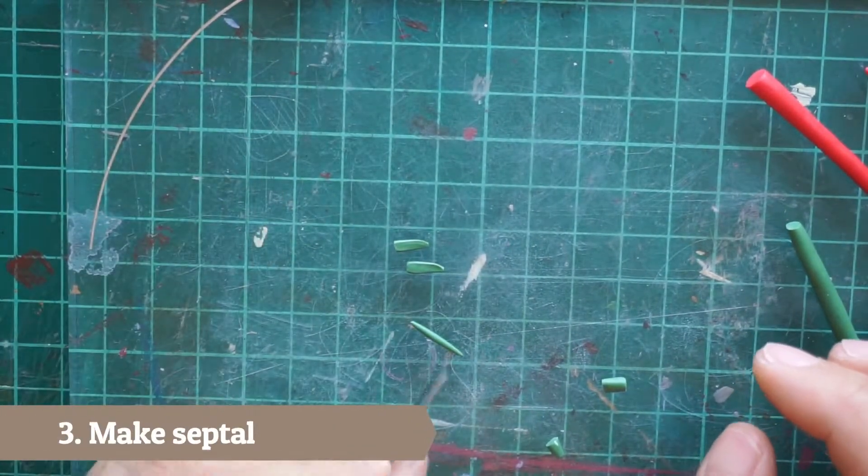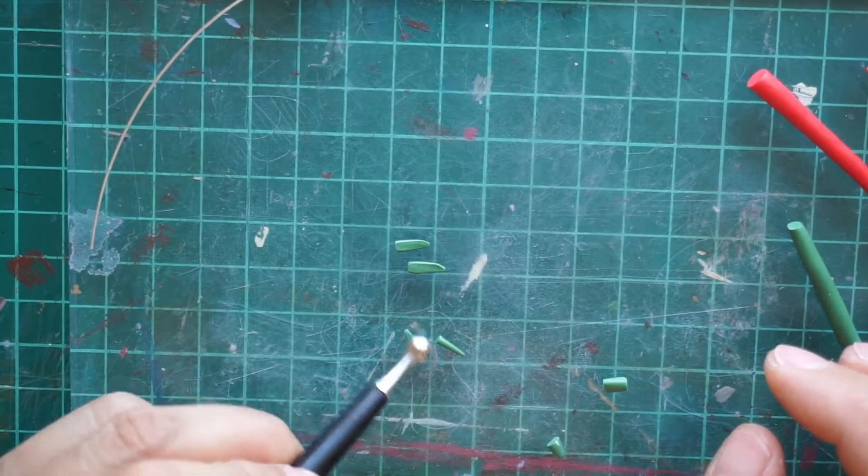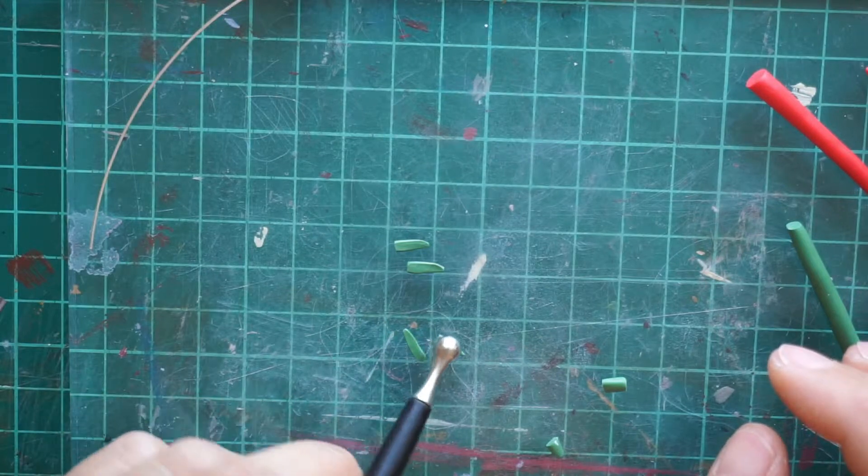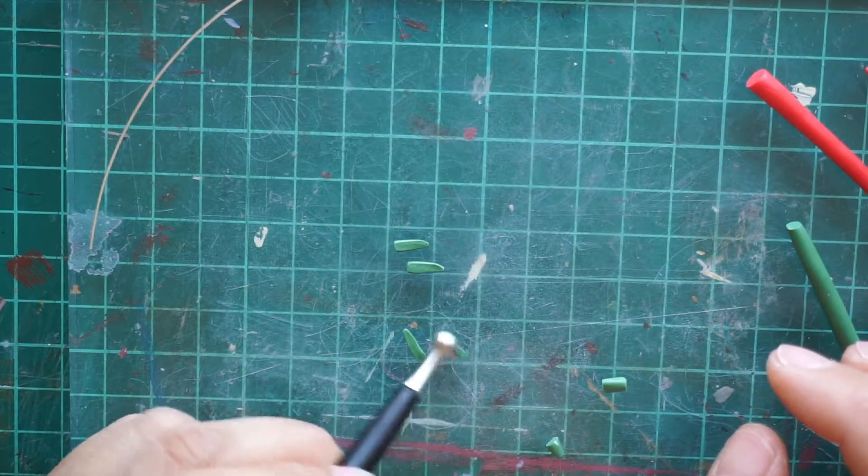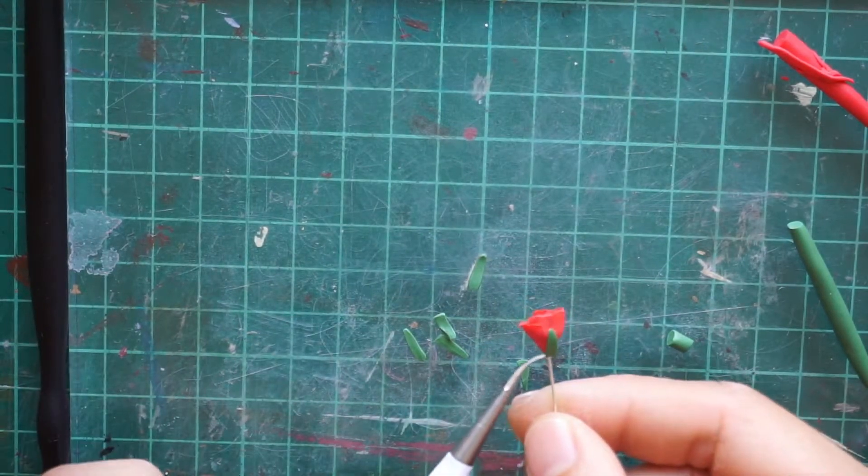For the sepal, you just need to roll the clay into a snake, focusing to make a pointy end, and then slice the middle and flatten the sliced sepal. Attach them to the rose and again pinch the bottom.